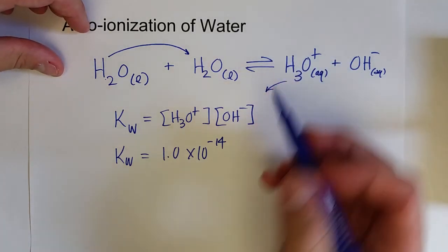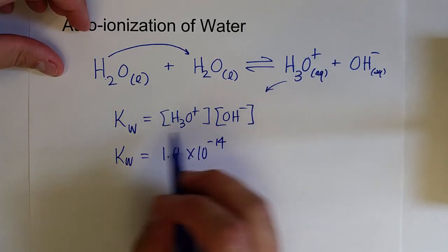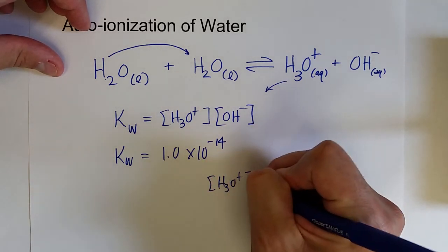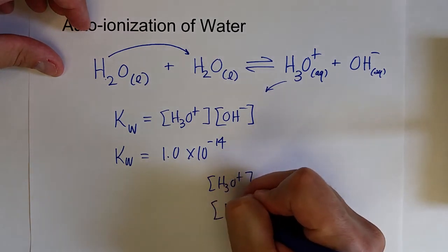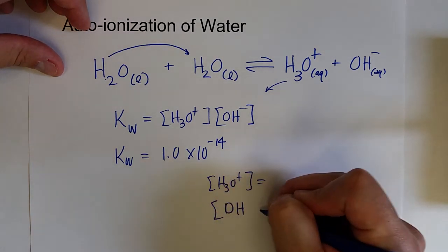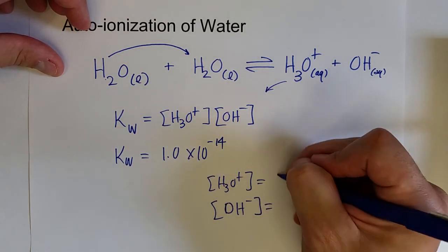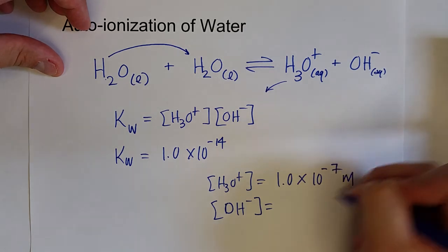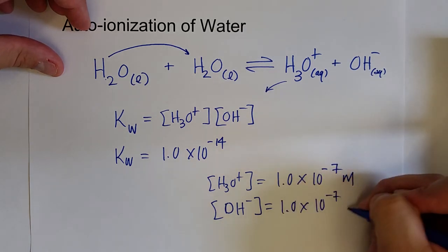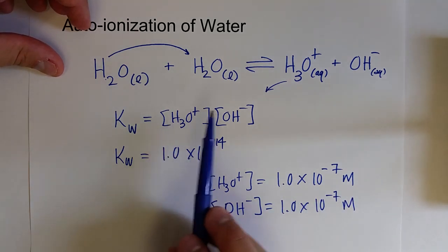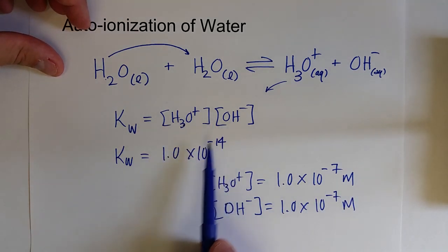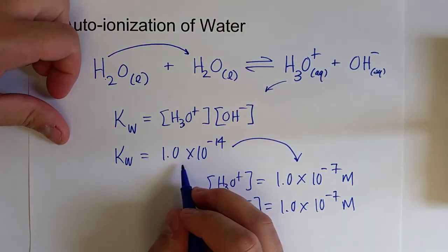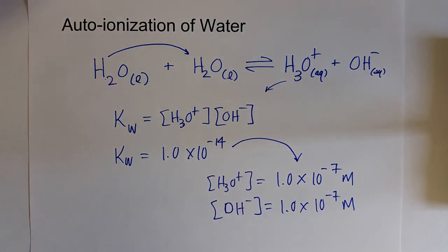Since these concentrations are the same, the individual concentrations of hydronium and hydroxide are each 1.0 times 10 to the negative 7th. If you multiply those two values — 1.0×10⁻⁷ times 1.0×10⁻⁷ — that gives you the value for Kw. Or you can figure this out by taking the square root of 1.0 times 10 to the negative 14th.